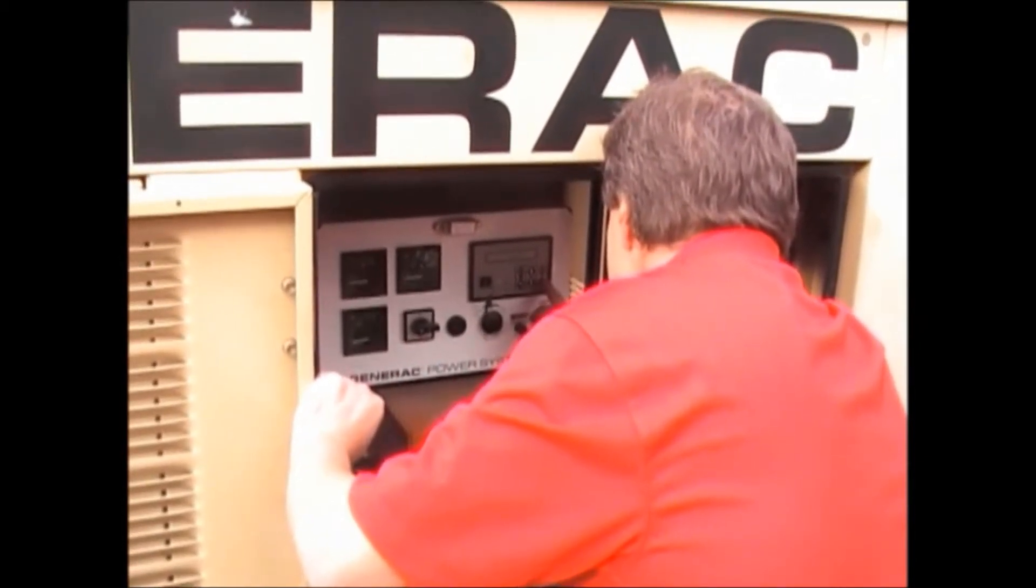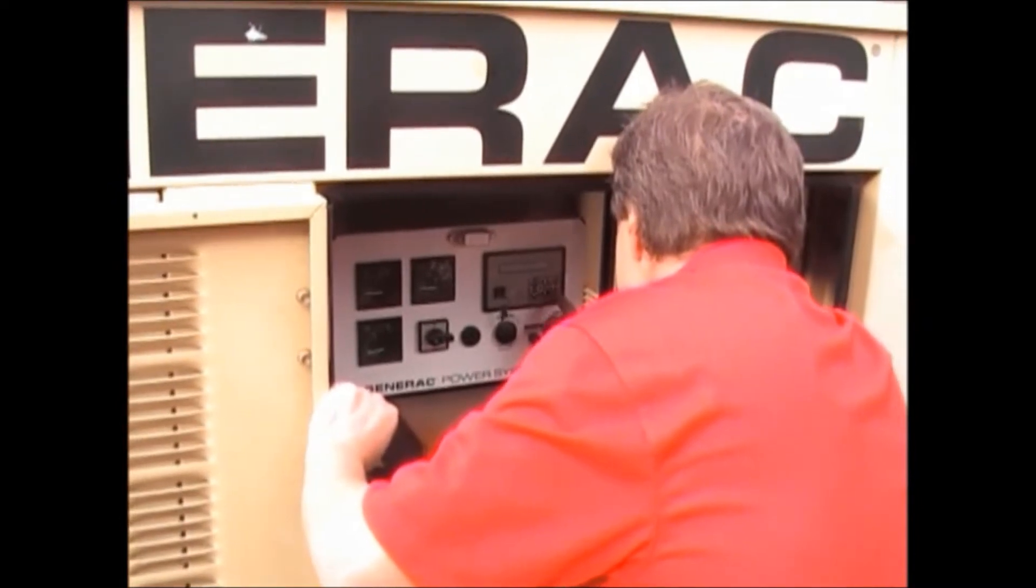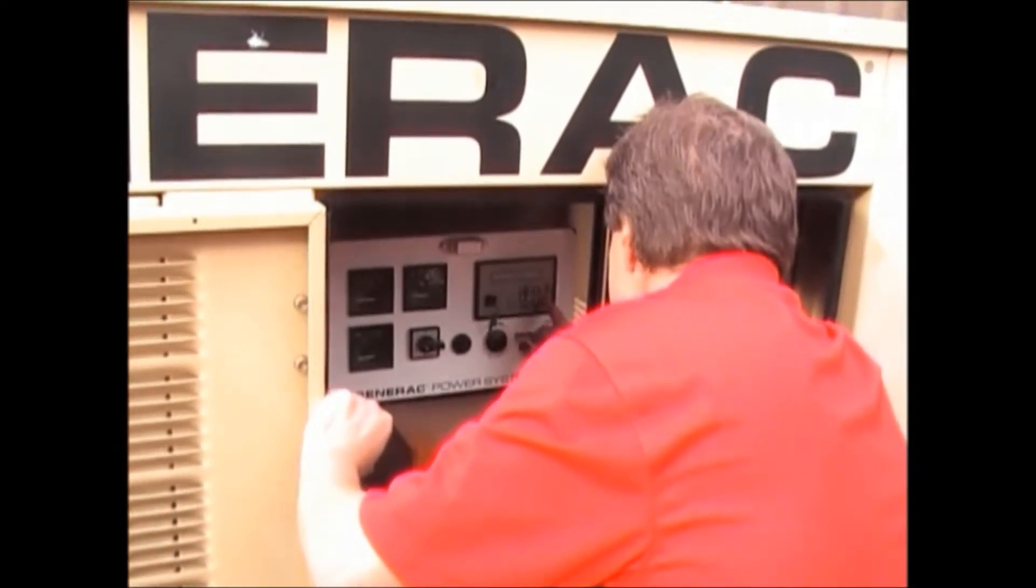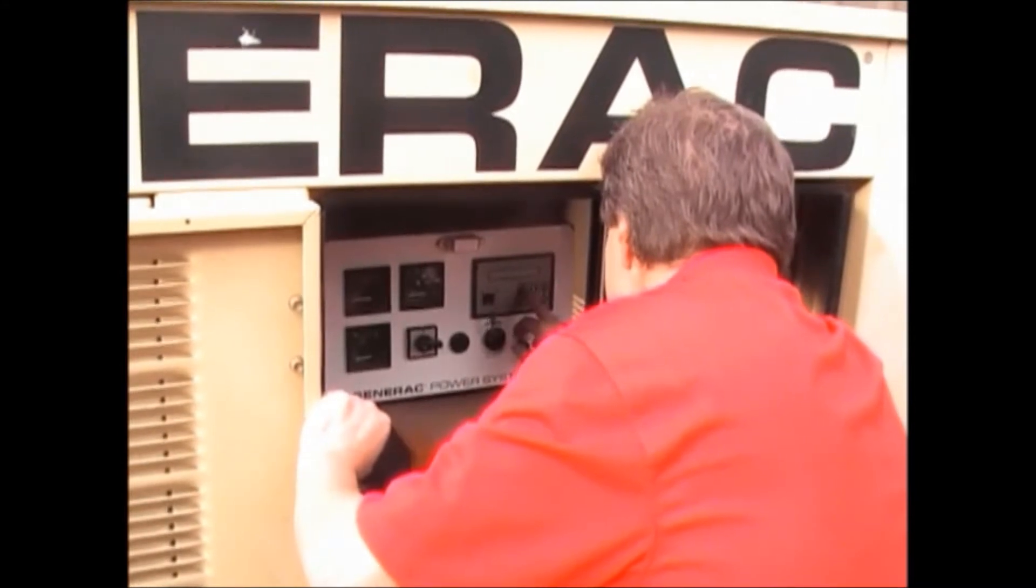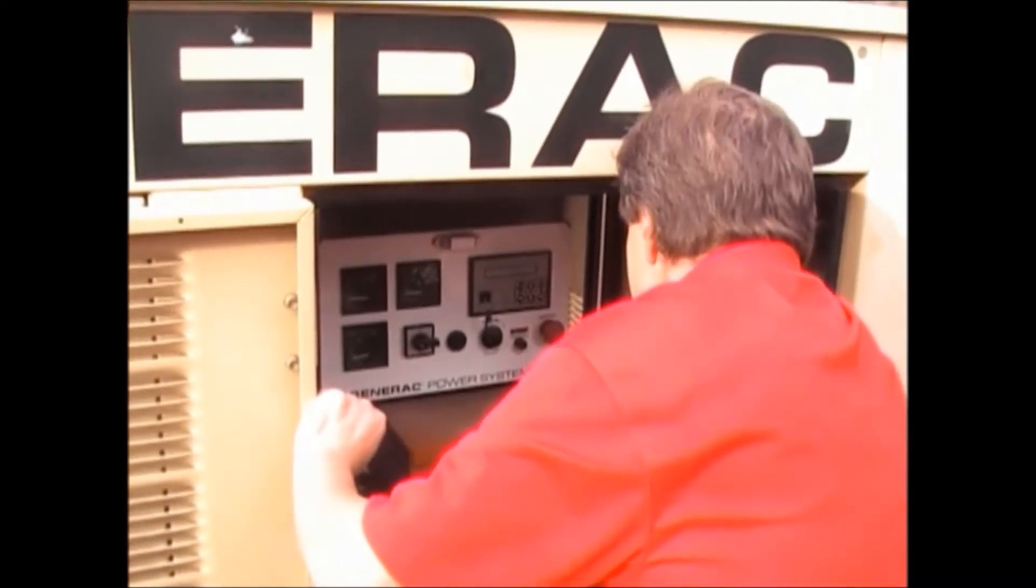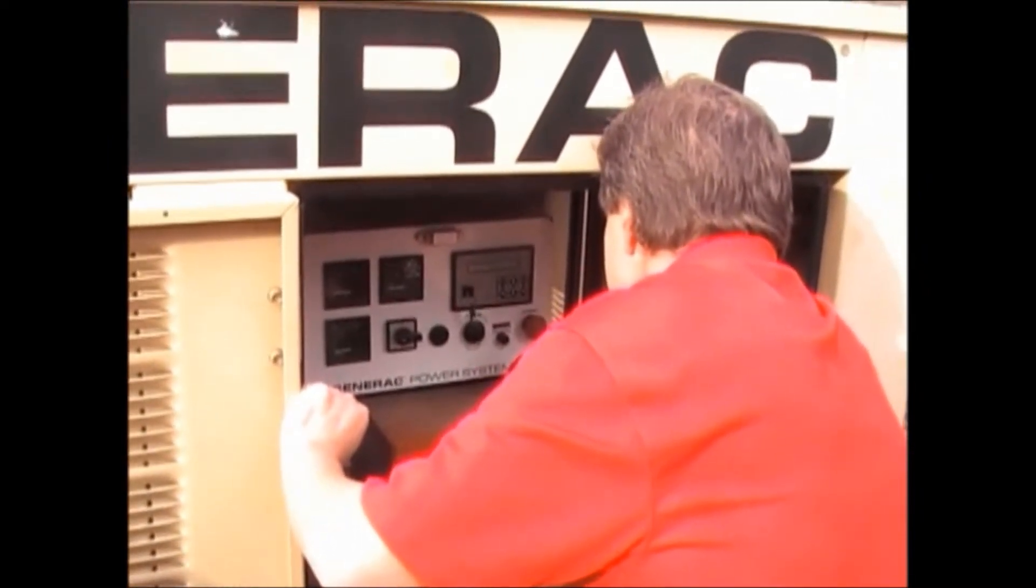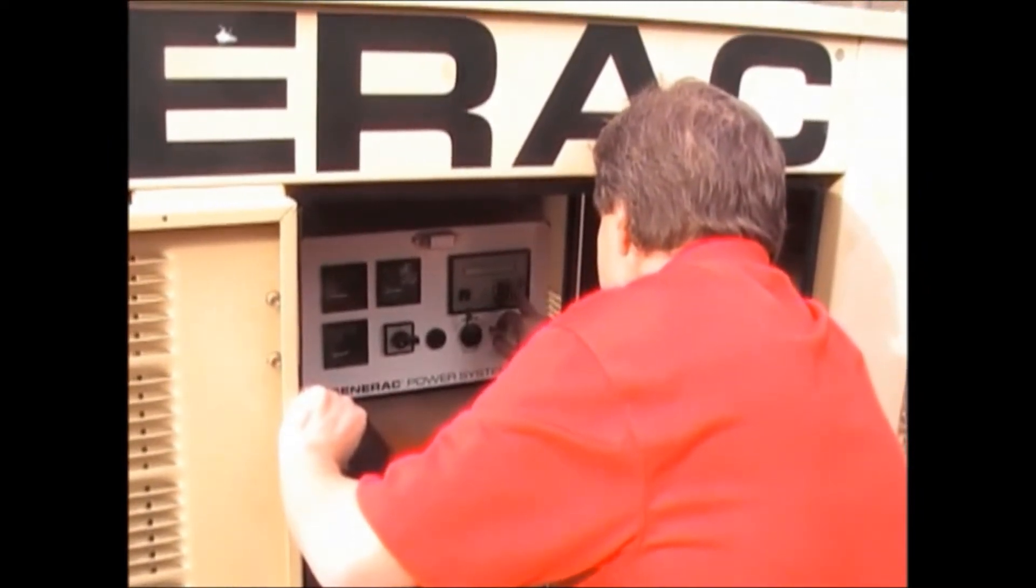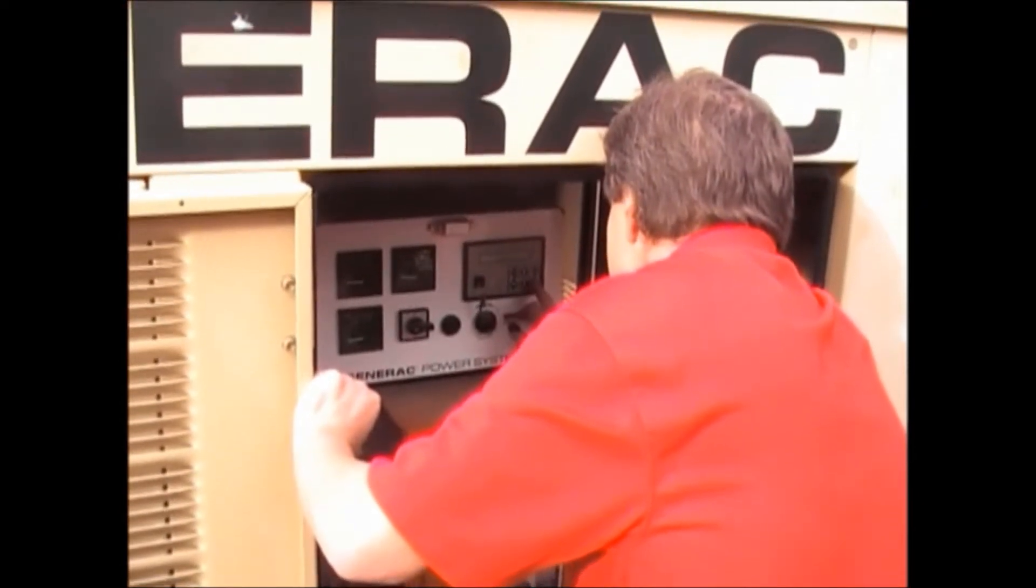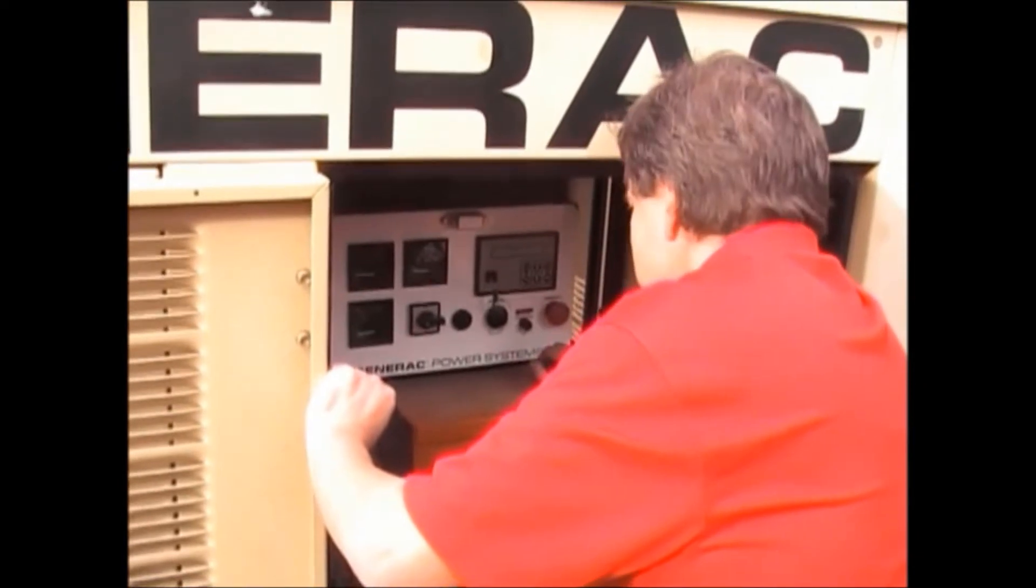The process for programming the controller is the following. First, you have to use the left arrow key until you come to the entry that says parameter entry and then we press enter. Then we put in the password. This password is known to Generac personnel and if you don't know the details then call Omnimetrics and we can assist.